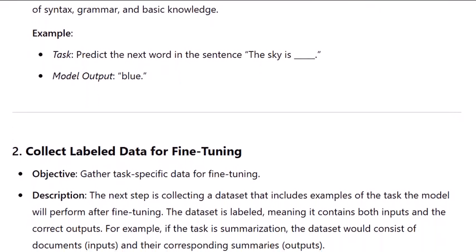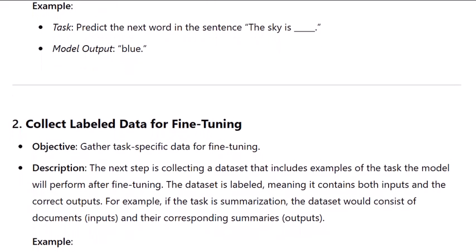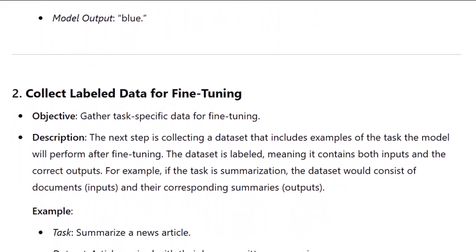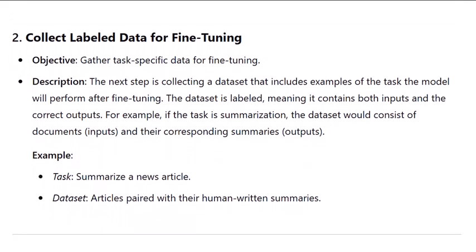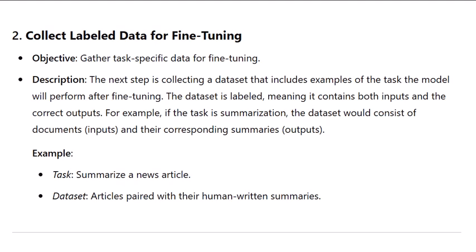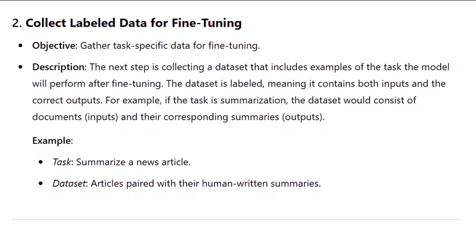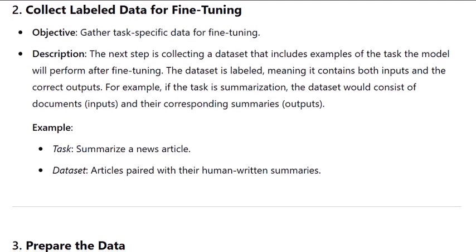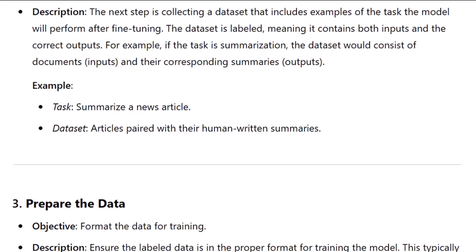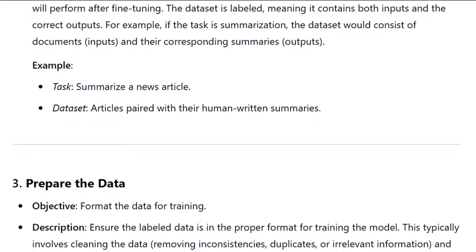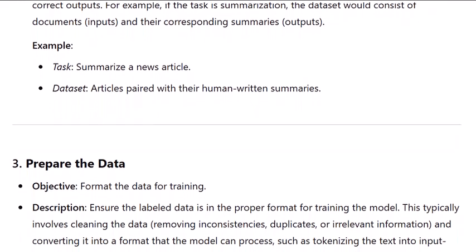Step two: collect labeled data for fine-tuning. Objective: gather task-specific data for fine-tuning. The next step is collecting a dataset that includes examples of the task the model will perform after fine-tuning. The dataset is labeled, meaning it contains both inputs and the correct outputs. For example, if the task is summarization, the dataset would consist of documents as inputs and their corresponding summaries as outputs. Example task: summarize a news article. Dataset: articles paired with their human-written summaries.